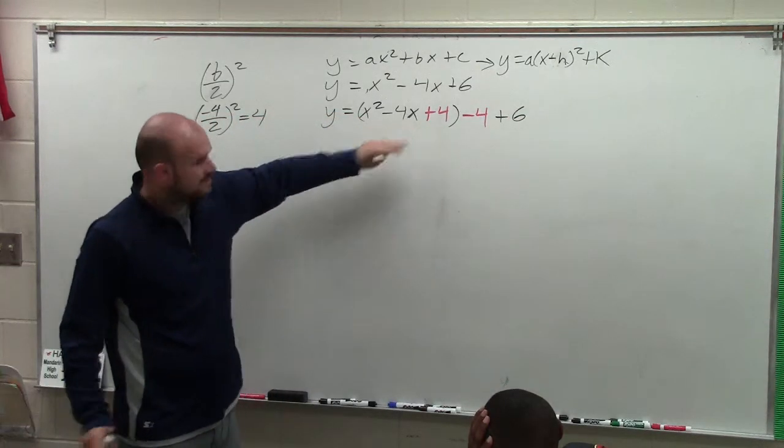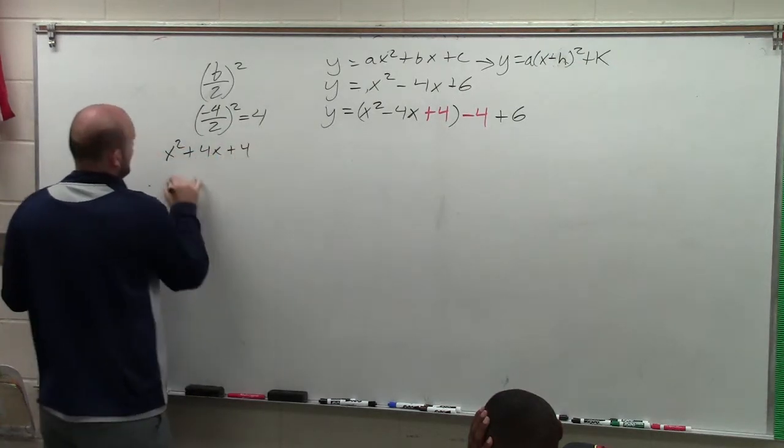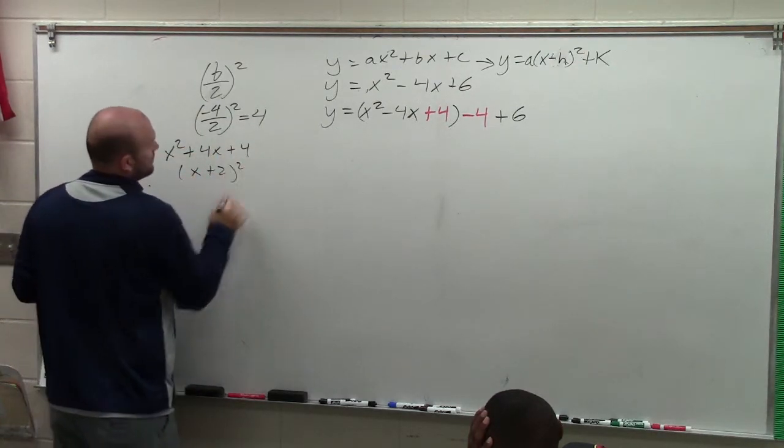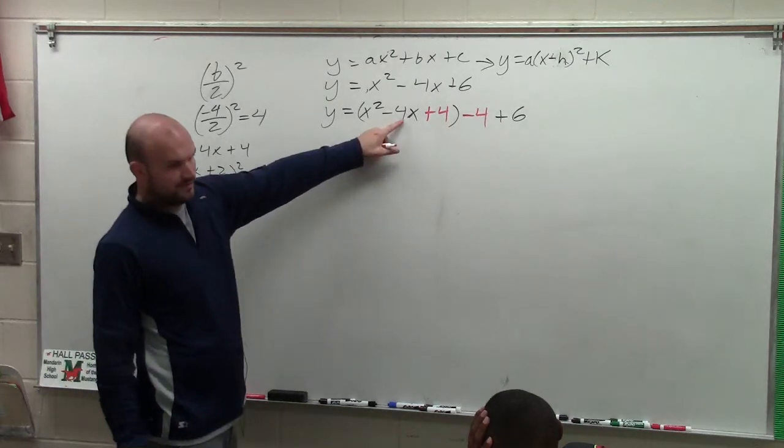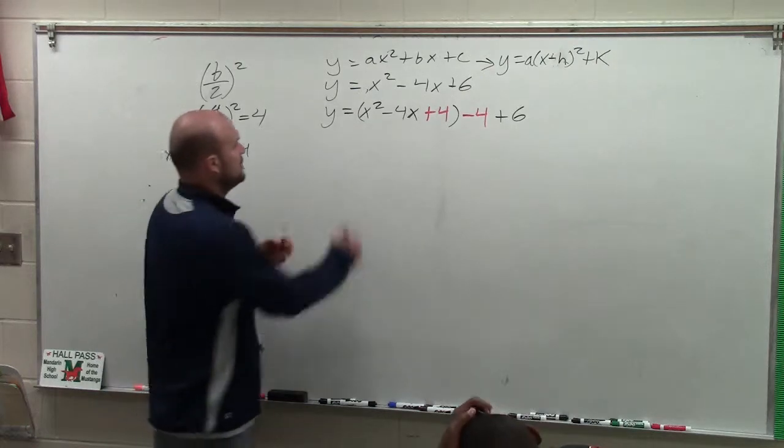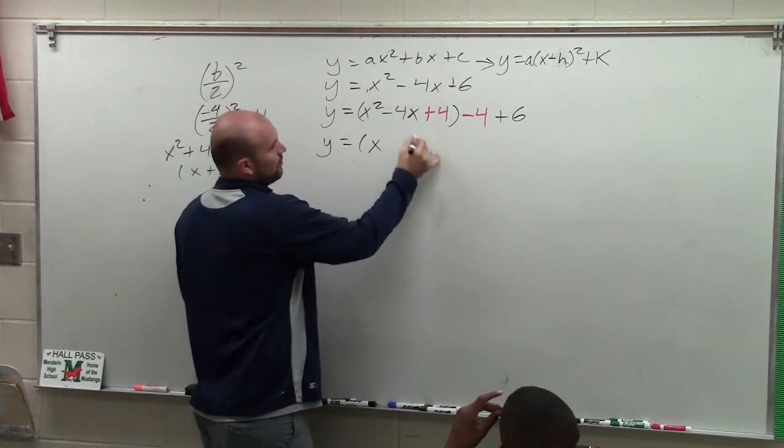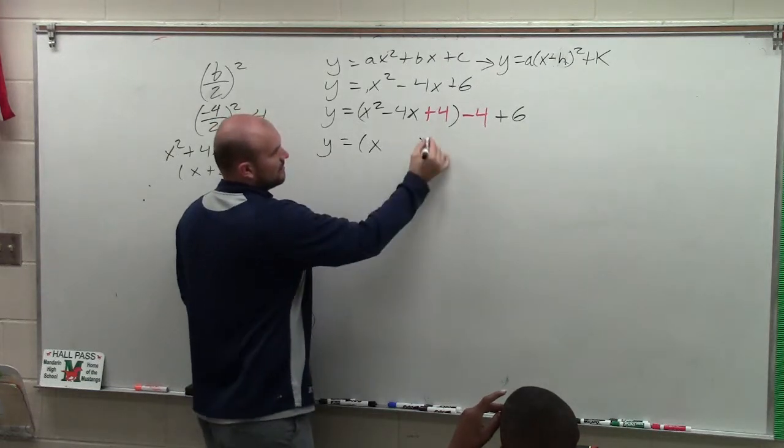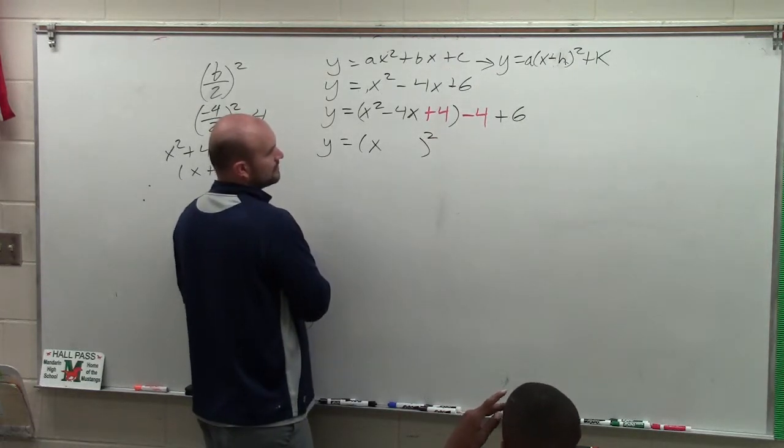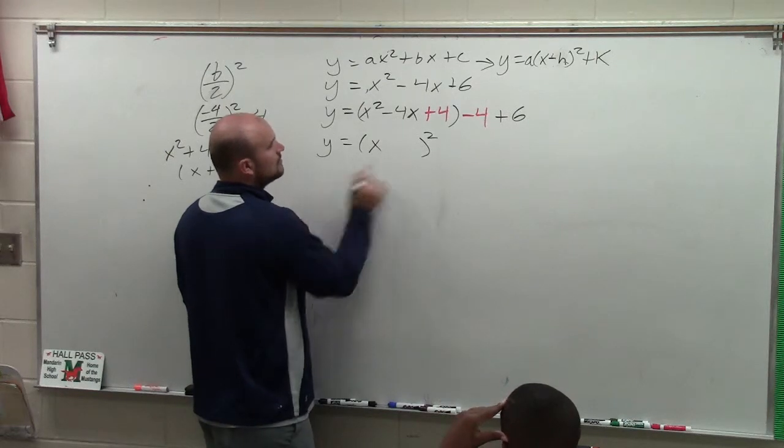Now we need to factor this. Now remember, I showed you the example x² plus 4x plus 4. That factored down to (x plus 2)². What do you think this would factor down to? If you were to factor this, you practice factoring by now. It's a perfect square trinomial. So it's going to be y equals x plus or minus what number by itself? Negative 2. Yeah, very good.